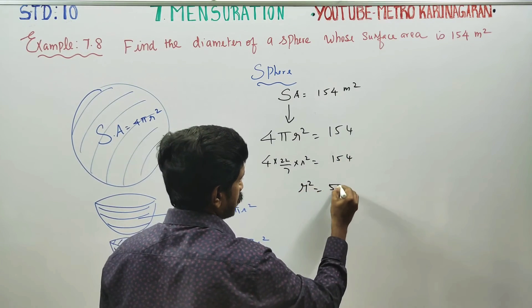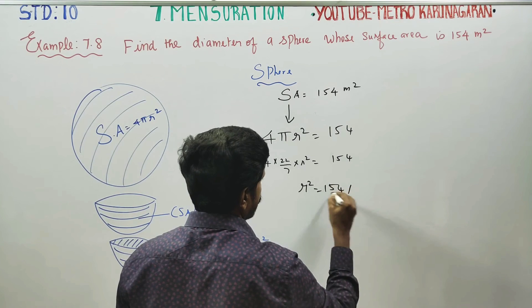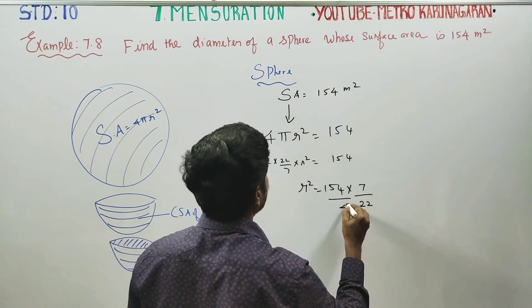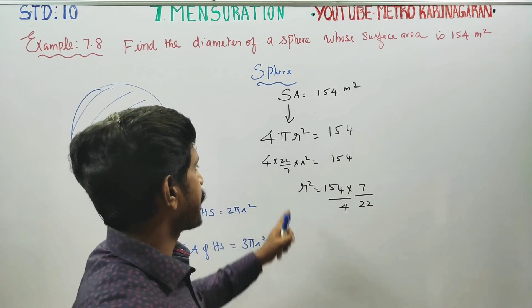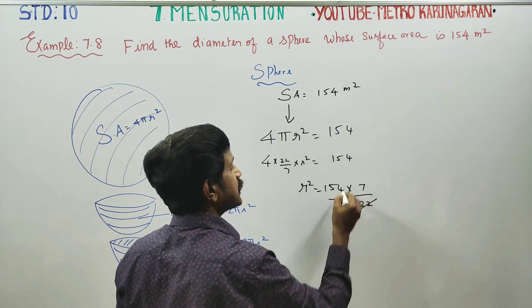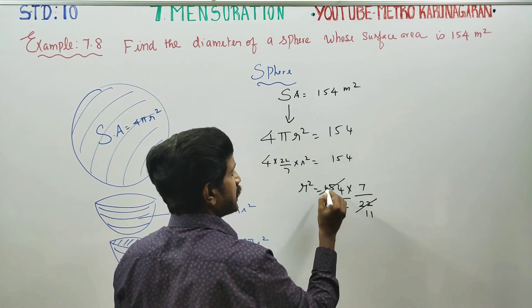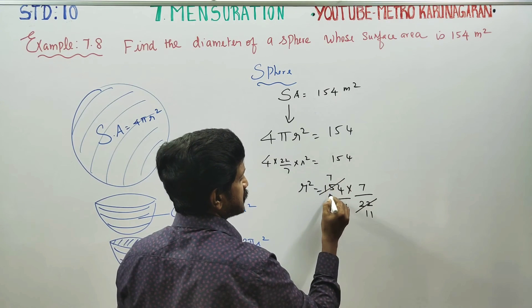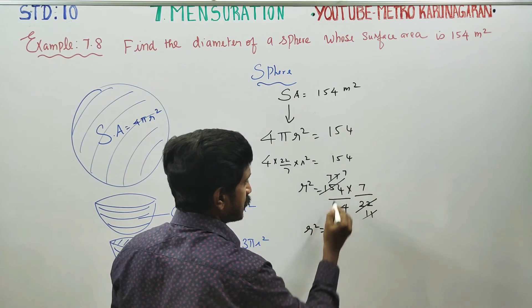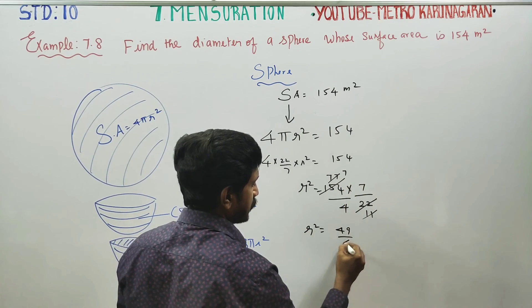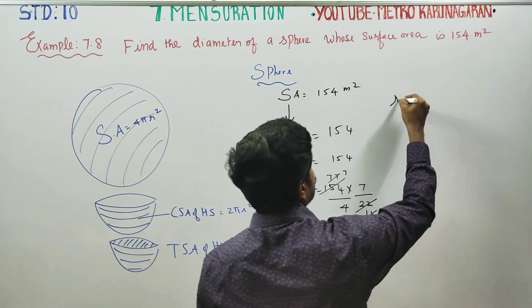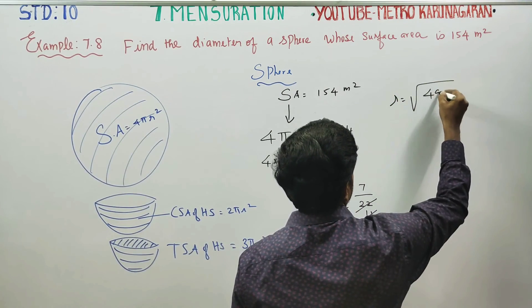Solving: r² = 154 × 7 ÷ (22 × 4). Simplifying, 154 divided by 22 gives 7, and 7 divided by 4 gives 49/4. So r² = 49/4.